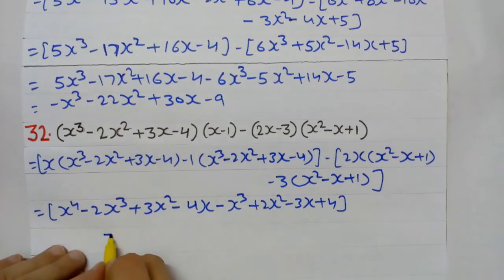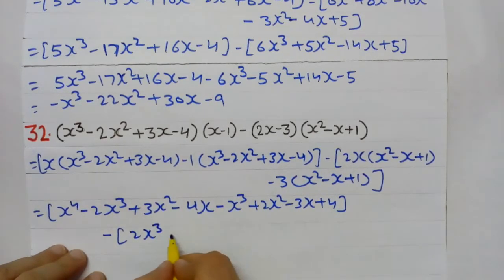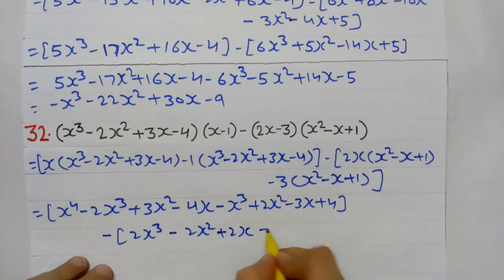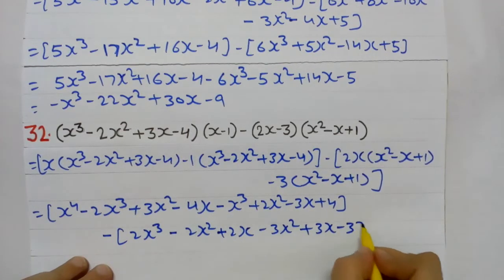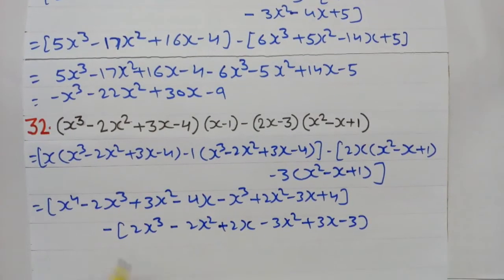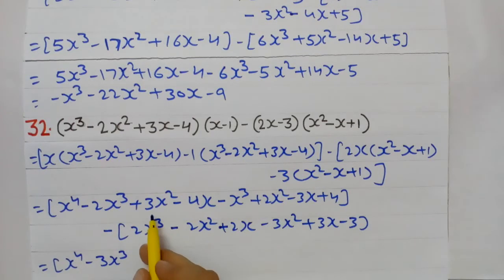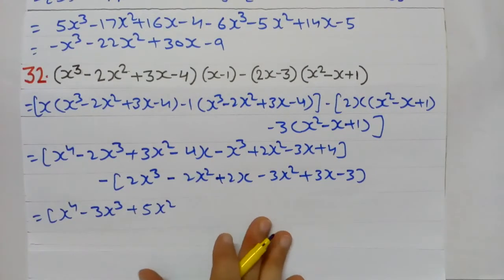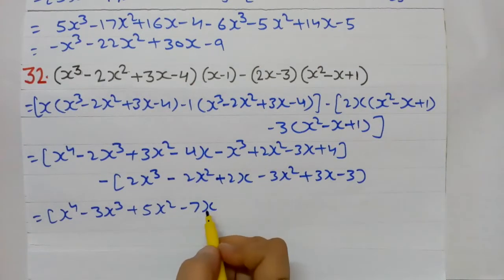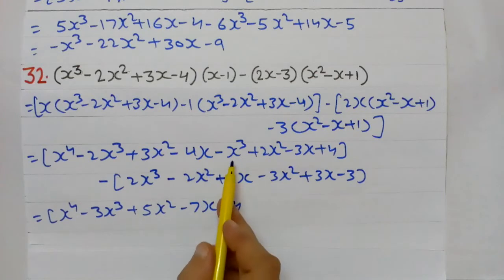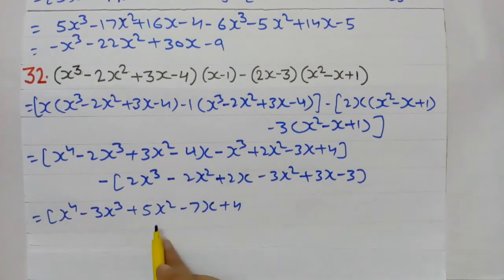Now here also with minus: 2x × x² = 2x³, 2x × (−x) = −2x², 2x × 1 = 2x. Multiplying by minus 3: minus 3x², minus × minus = plus 3x, minus 3. Solving like terms inside the first bracket: x⁴ as is, −2x³ − x³ = −3x³, 3x² + 2x² = 5x², −4x − 3x = −7x, plus 4 as is. In the second bracket: 2x³ as is, −2x² − 3x² = −5x², 2x + 3x = 5x, minus 3 as is.